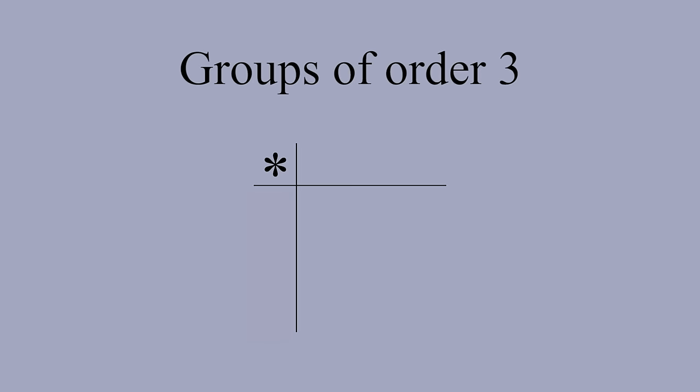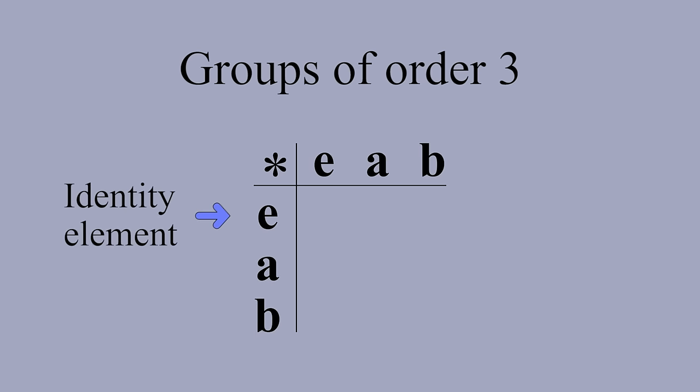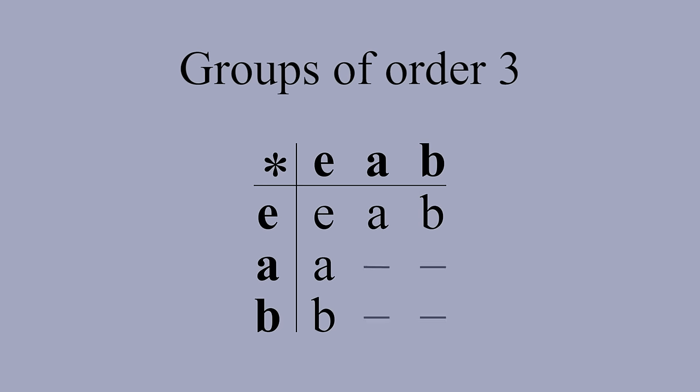Now let's find all groups of order 3. We'll call the three elements E, A and B, where E is the identity element. Because E is the identity element, we can quickly fill in the first row and first column. This leaves four empty squares in our Cayley table. Let's try to figure out what goes in this square. It can't be A because this row already contains an A. This means it's either E or B.